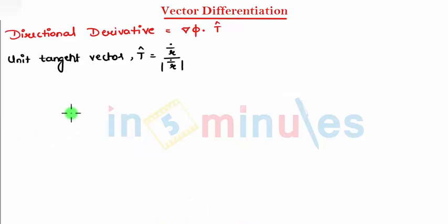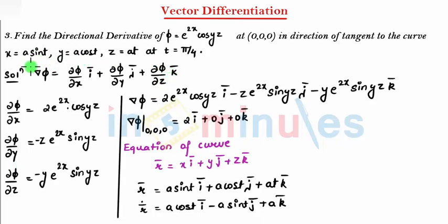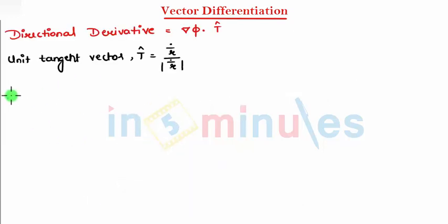I can say here that I need to find, if you see in the question it is said that this curve is at t equal to π/4. So let's say now r bar dot at t equal to π/4.